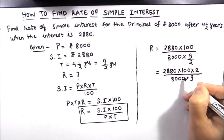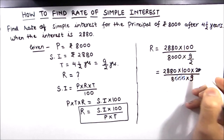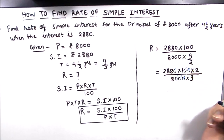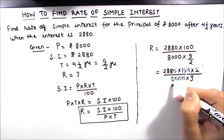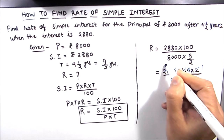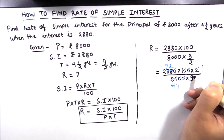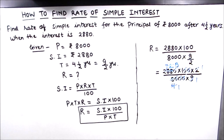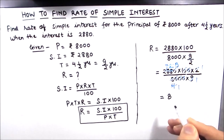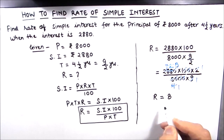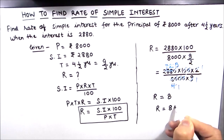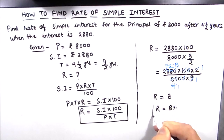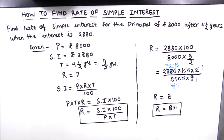Now we will solve this. The three zeros in the denominator cancel with two zeros in 100 and one zero in 8000. After simplification we are only left with 8 in the numerator. So our rate of interest is 8%. This is our final answer, and we will box it. This is how we can find the rate of interest using the simple interest formula.